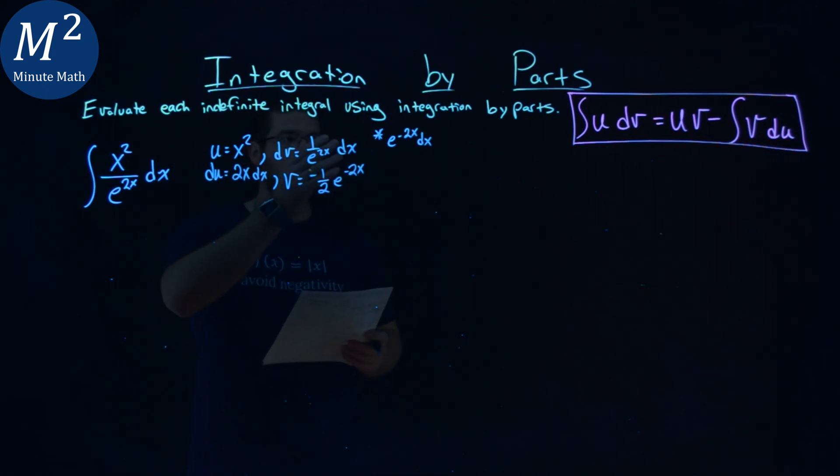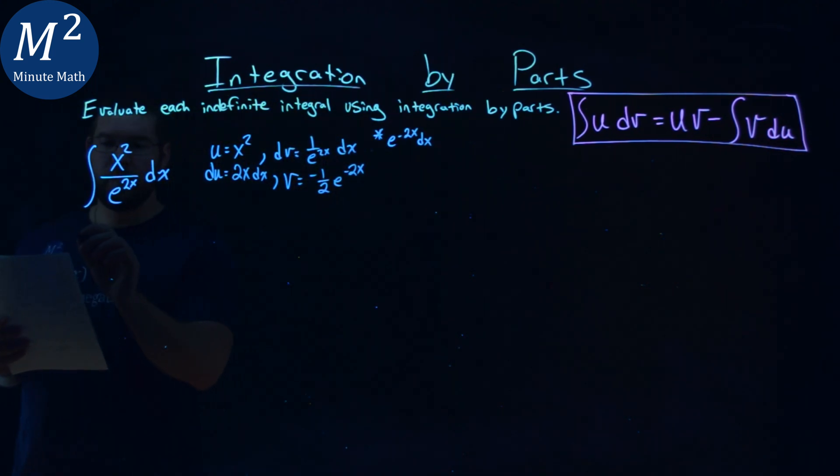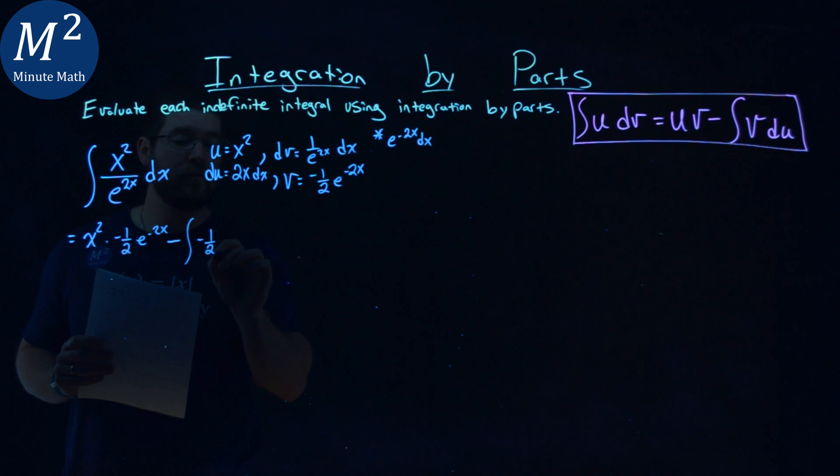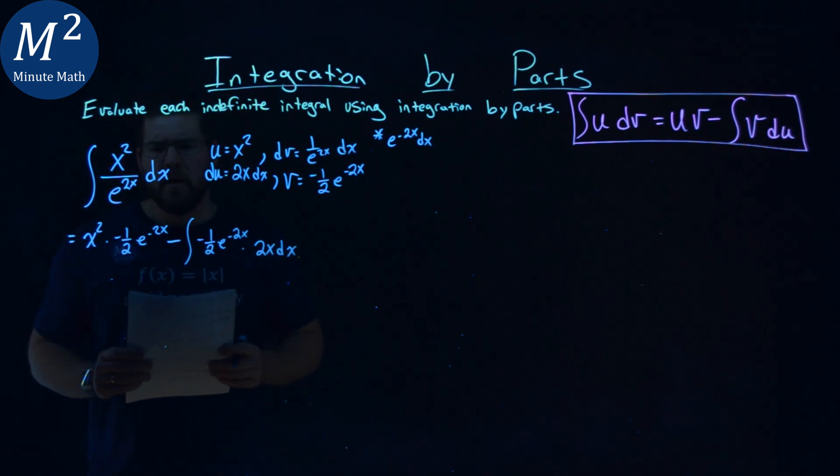So now let's go apply our formula here. So we have our u times our v value, so x squared times our v value, which is negative 1 half e to the negative 2x power. Got that there. Minus our integral of our v value, which is negative 1 half e to the negative 2x power, times our du value, which is 2x dx.